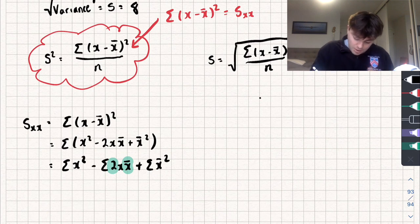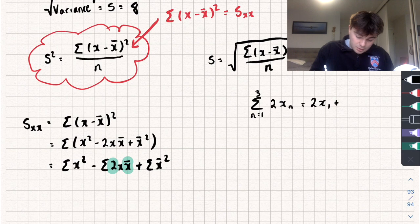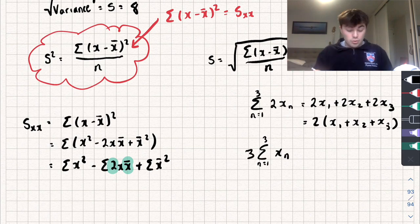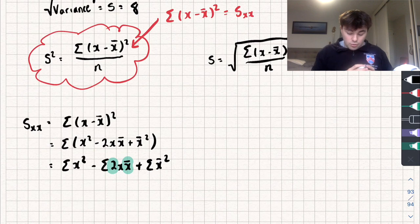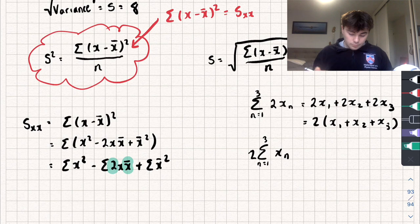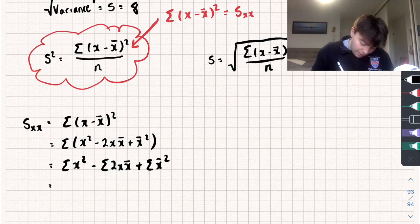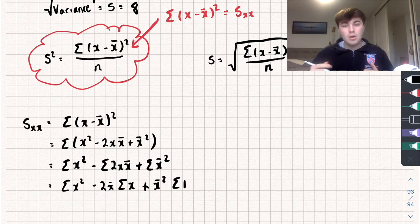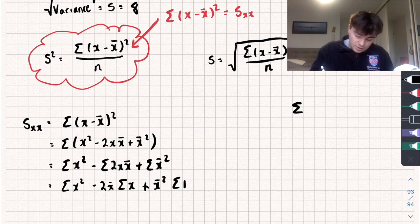If we have a constant value — for example our 2 or the mean x-bar — we can pull it out to the front of the sum. For instance, the sum of 2xn equals 2 times x1 plus 2 times x2 plus 2 times x3, which factors to 2 times (x1 + x2 + x3). So we can pull constants outside the sigma. Using that, we pull out the 2 and x-bar from the middle term, and x-bar squared from the last term.